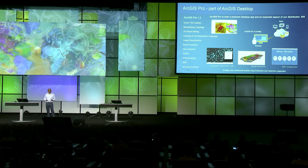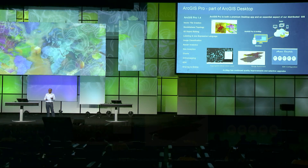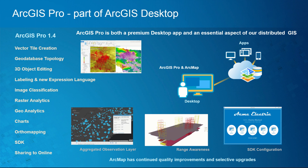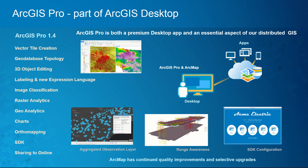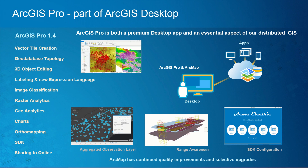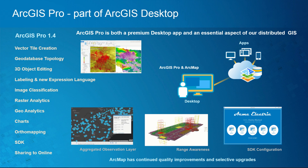ArcGIS Pro and ArcGIS Desktop are an essential part of our platform. They are both consumers of information from the platform and also create information that can be disseminated and used within it. We've seen huge releases of Pro through 2016, and that's going to continue into 2017, with lots of functionality for things like vector tile creation, 3D object editing, image classification, and ortho mapping.